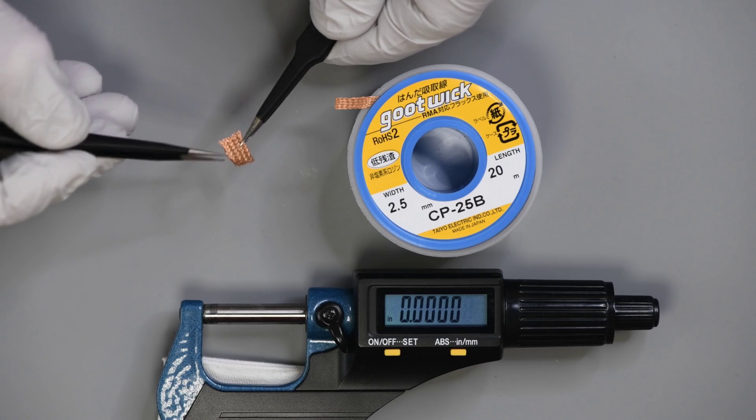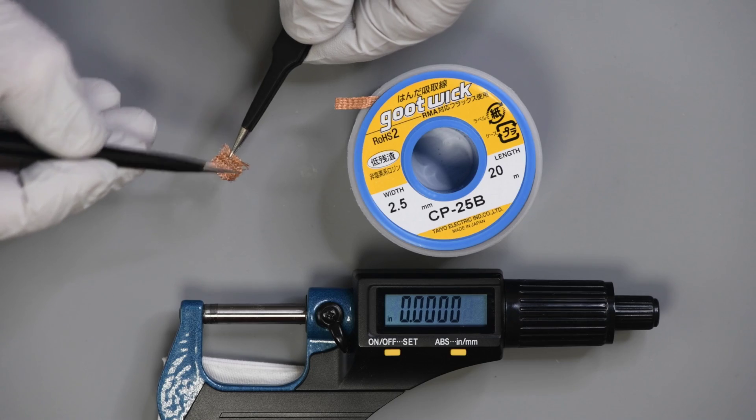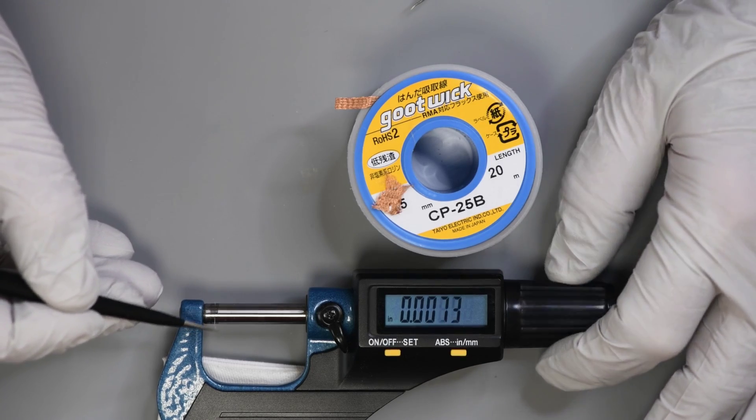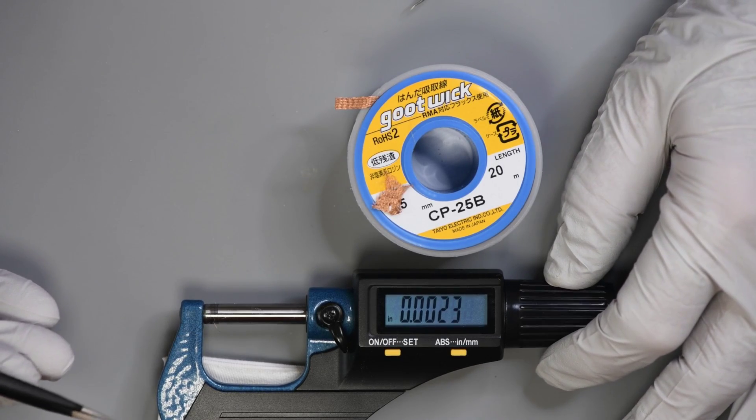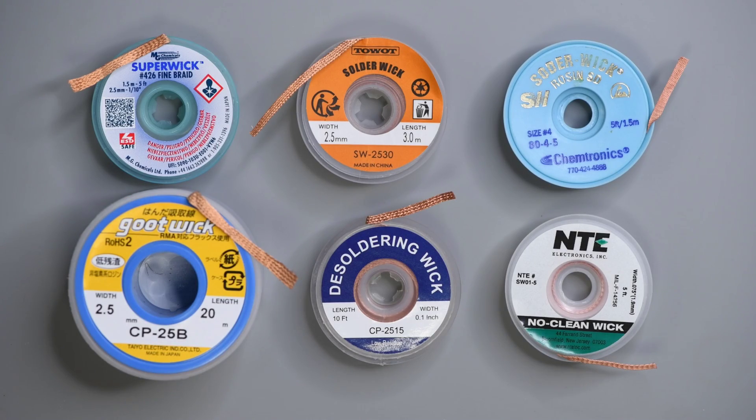The GUT wick again is very easy braid to pull apart. And has the same wire size as the MG Chemicals, 23 ten thousandths of an inch. I kind of find that interesting. After a few feet of each of the braids and a few hours of testing, I have some thoughts.